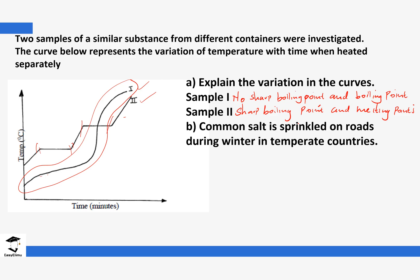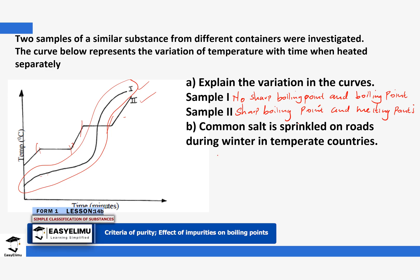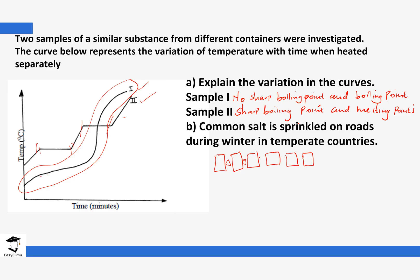The next question: common salt is sprinkled on the roads during winter in temperate countries — explain this. Common salt is sprinkled and it interferes with the structure of the ice. Ice is in a solid state so particles are in fixed positions. When you add salt, it comes between the particles and interferes with their structure, weakening the forces of attraction between particles, causing the ice to melt at a lower temperature than normal. So salt lowers the melting point of ice.